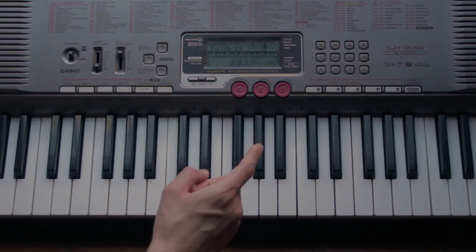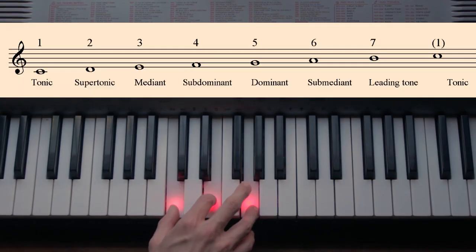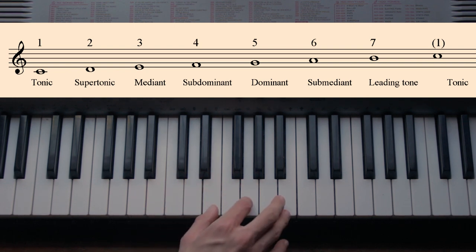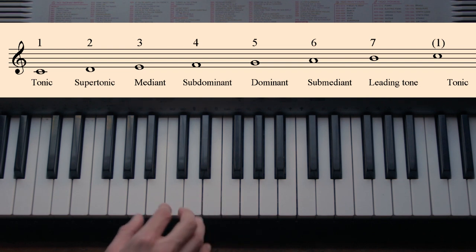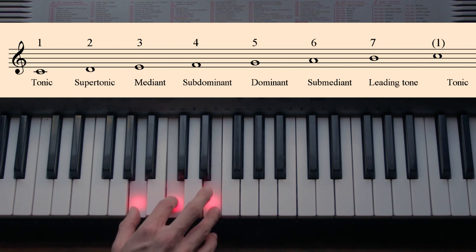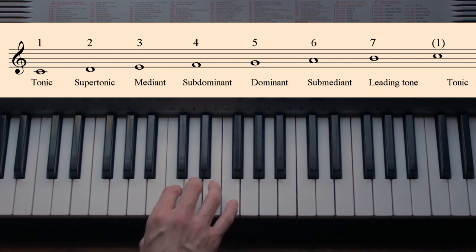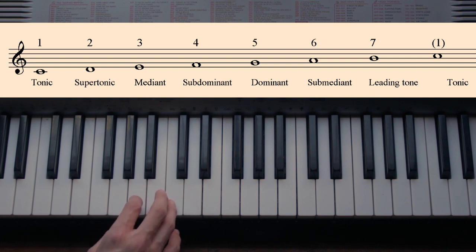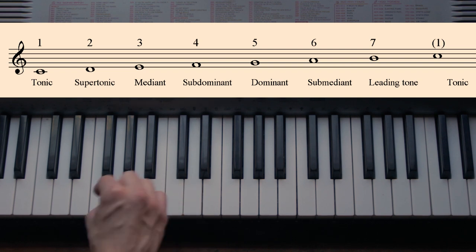A very simple way to look at chromatic mediants is playing a chord and then moving it by thirds. The name chromatic mediant comes from the distance between the roots of the chords. If we are in the key of C major, our mediant is the third — E minor — and the submediant is the sixth — A minor. So the mediant is a major third away from C, and the submediant is a minor third away from C, in the opposite direction.